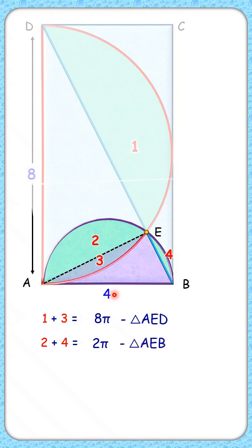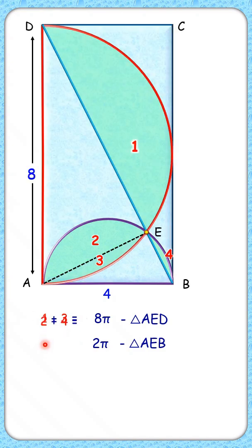Now adding these equations, the left-hand side will become one plus two plus three plus four. The right-hand side, 8π plus 2π will be 10π minus area of triangle AED, that is this pink area, plus area of triangle AEB.